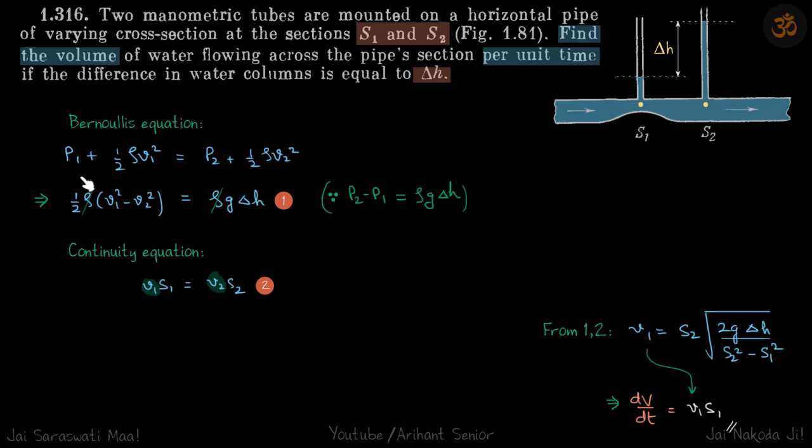Let's do Bernoulli's equation between point 1 and 2. So p1 plus half rho v1 square is equal to p2 plus half rho v2 square. And we can see that pressure difference between these two points is rho g delta h.